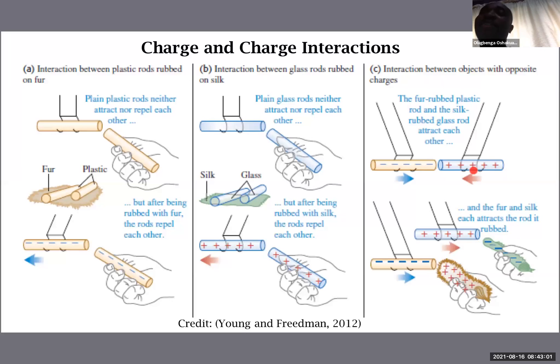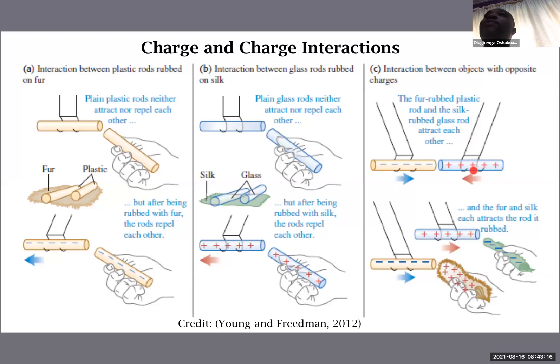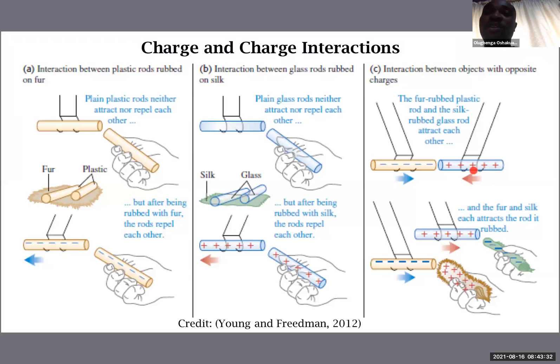This is similar to what happens with sodium chloride. Sodium lost an electron to chlorine, they now have opposite charges, and since they have opposite charges the chlorine ion and sodium ion attract and form a very strong ionic bond.